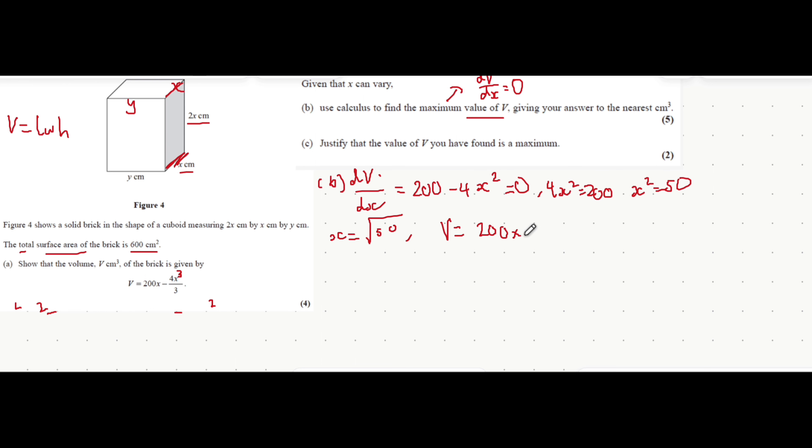You do 200 multiplied by that value of x that we found, root 50, minus 4 over 3 multiplied by root 50 all cubed. That'll get you a value of 943. Because it's a volume, it's measuring centimeters cubed.